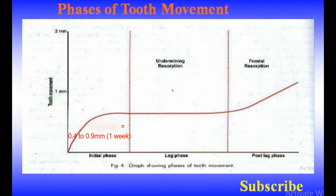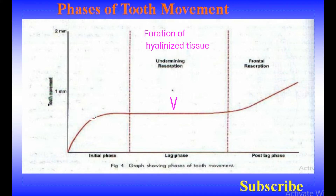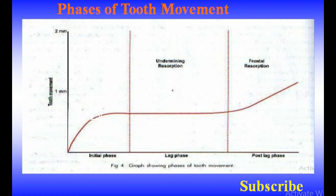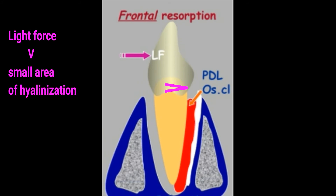During the lag phase, little or no tooth movement occurs. This phase is characterized by the formation of hyalinized tissue in the periodontal ligament, which has to be resolved before further tooth movement can occur. The duration of the lag phase depends on the amount of force used to move the tooth.